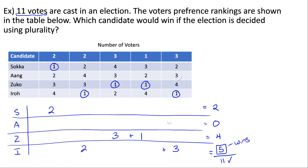Aang didn't end up getting any votes — that's another thing that can happen in these problems. You may have a candidate who isn't anybody's first choice, so they don't get any votes in a plurality election. That doesn't mean you made a mistake; it just means they didn't get any votes. If you see this happen, don't automatically think somebody has to vote for them — that's not always the case.